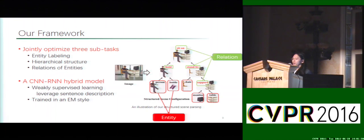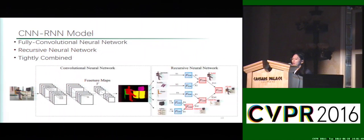Here is a parse tree generated by our method. Technically, our model is built by integrating the convolutional neural network and the recursive neural network into a unified framework, and the model can be trained in a weakly-supervised way by leveraging image descriptions. This is the architecture of our scene parsing framework. We adopt a fully convolutional neural network to generate feature representations and segmentation masks for semantic categories, and then use a recursive neural network to predict structure over a scene, with the two components tightly combined in an end-to-end way.